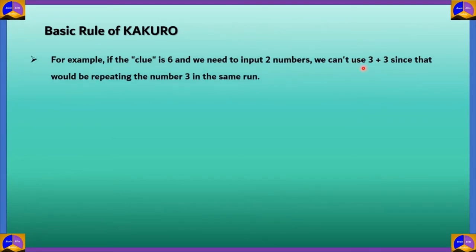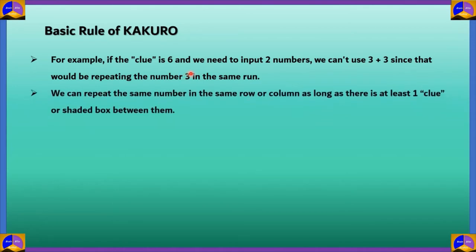For example, if a clue is 6, that means the sum that we need to get is 6, and we need to input two numbers. We cannot use 3 plus 3, because we cannot repeat numbers in a horizontal or vertical block. Since there is a repeat of number 3 in the same run, we can't use 3 plus 3 to get 6. We can only repeat the same number in the same row or column, as long as there is one clue or shaded box in between them.